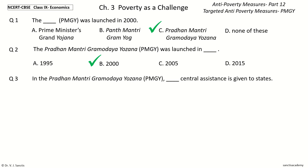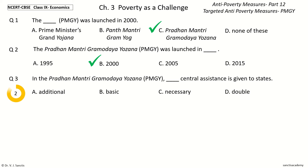Question 3: In the Pradhan Mantri Gramodaya Yojana (PMGY), blank Central Assistance is given to States. The options are: Additional, Basic, Necessary, or Double. Your time to choose. And the answer is Additional.